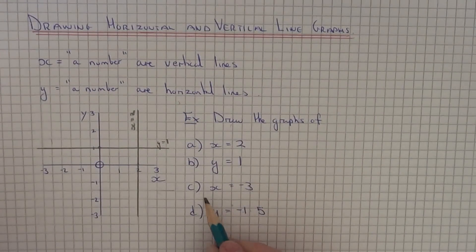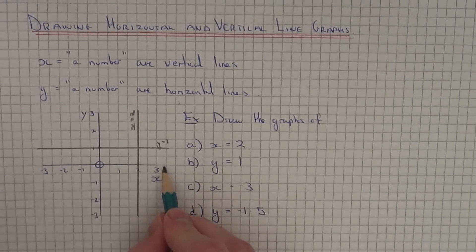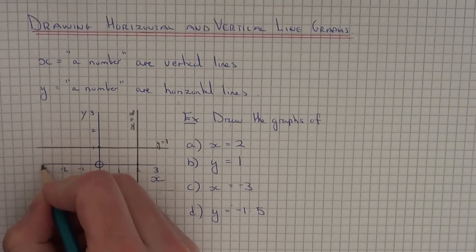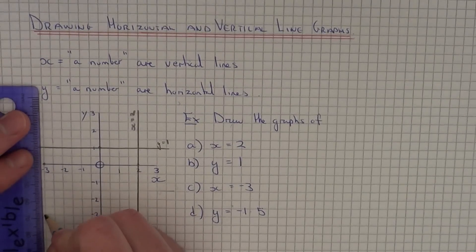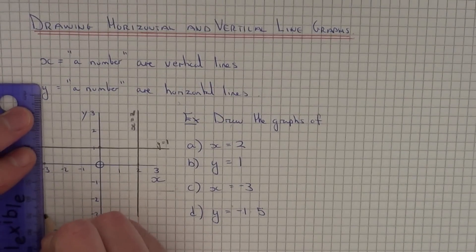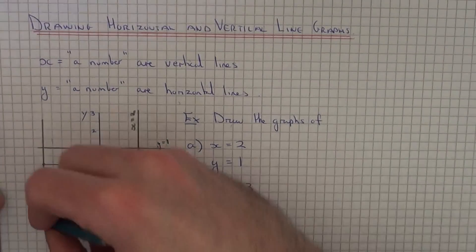Part C, we've got to plot the line x equals minus 3, so if we look for x equals minus 3 along the x-axis which is here. And this time it will cut through the x-axis at minus 3, so we've got a vertical line.